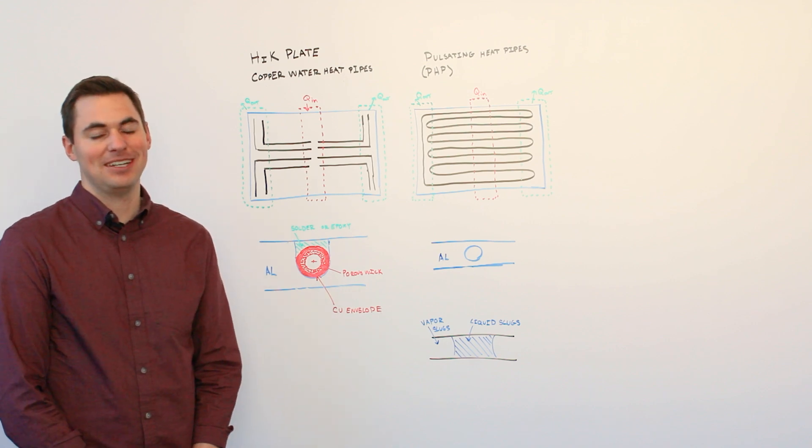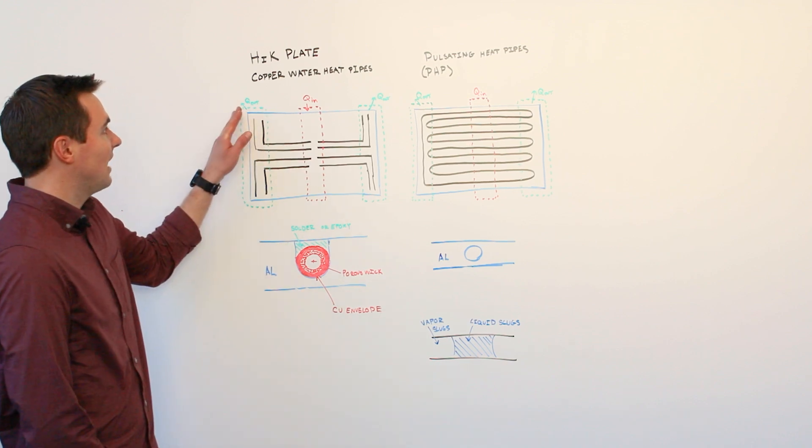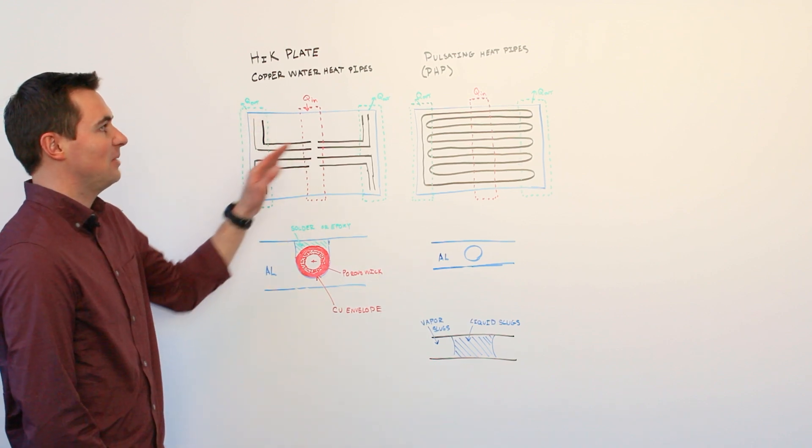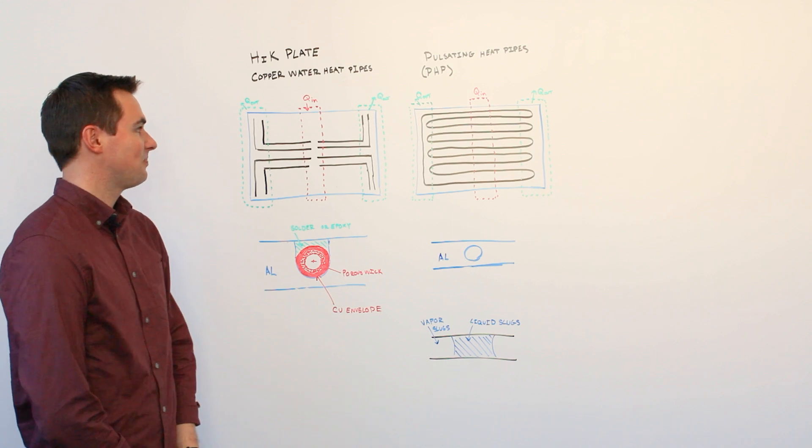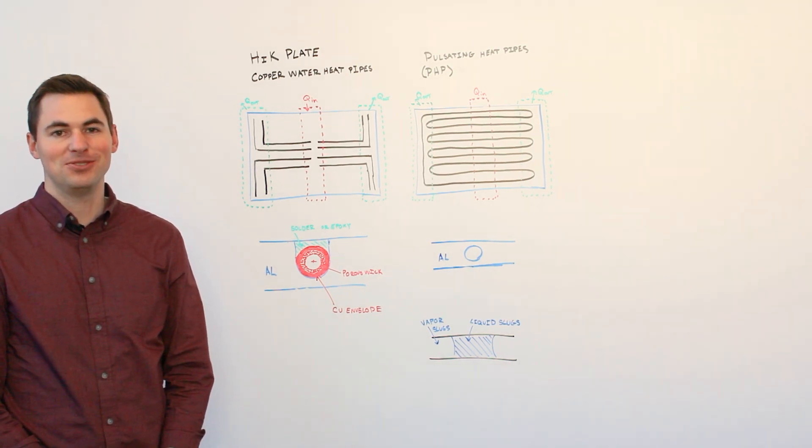Today I'd like to talk about two of our passive two-phase cooling technologies: high K plates with embedded copper water heat pipes and pulsating heat pipes. I'd like to talk about the distinctive features between both and why you may choose one over the other.